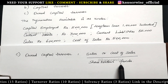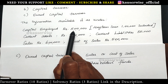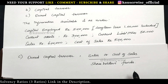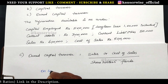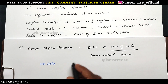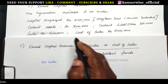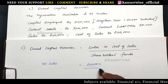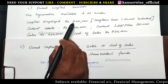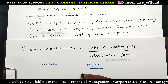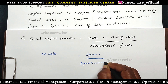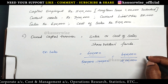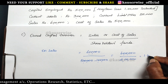To find out shareholders fund: capital employed 5 lakhs minus long term loan 1 lakh. So shareholders fund is 4 lakhs. Owned capital turnover ratio on sales is equal to sales 6 lakhs divided by shareholders fund — capital employed 5 lakhs minus long term loan 1 lakh — equals 4 lakhs. The answer is 1.5 times.